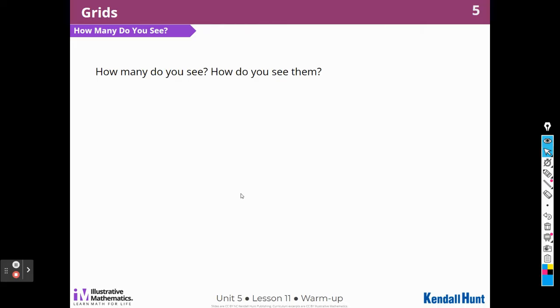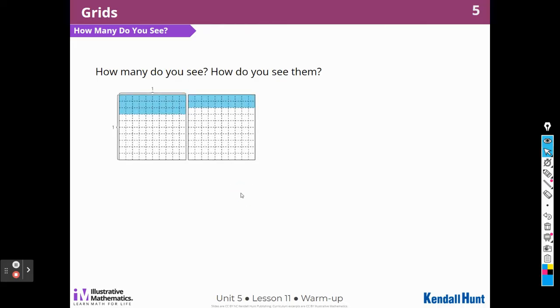Here's our warm-up. How many do you see, and how do you see them? When I look at this first picture, I see two squares, and it looks like each square, if they were all filled in with blue, would be one. I'm going to count how many rows are highlighted or colored in each one, and that's going to be a tenth.